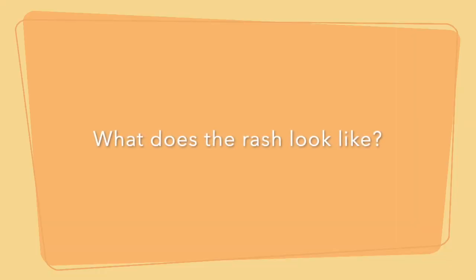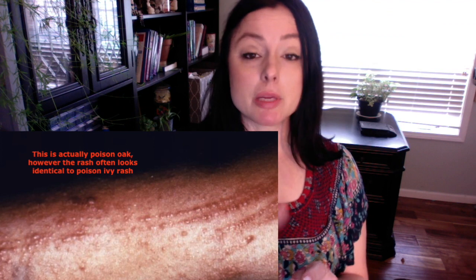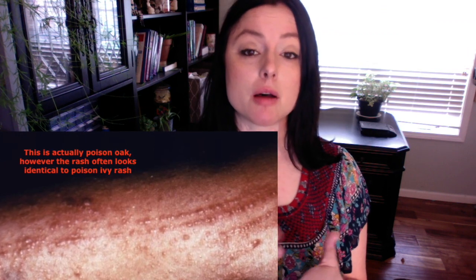Another name for the poison ivy rash is contact dermatitis, because you've gotten in contact with something causing irritation and inflammation to your skin. It can appear in streaks, lines, vesicles, or blisters and may be on various parts of your body — including around your eyes. Some patients have actually gotten it into their eyes, which is very bad. It can also get into your lungs, which is also very bad.